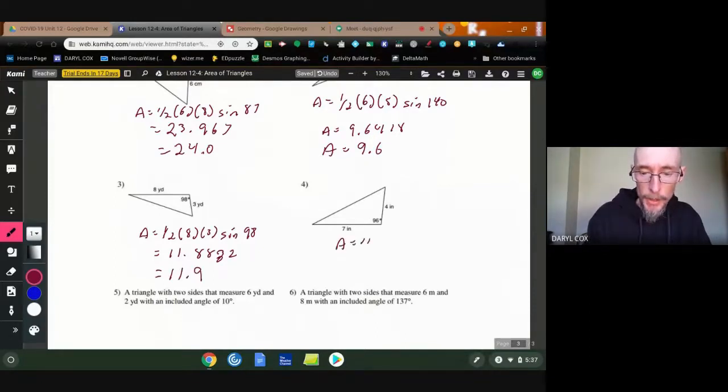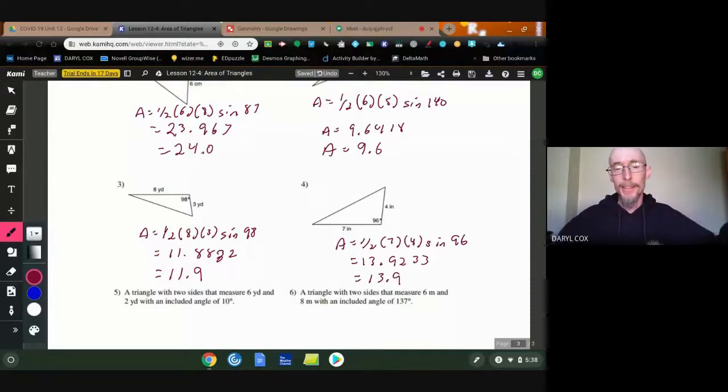Okay, the last one, seven times four, sine of 96. So that's going to be, whoops, that is not what I wanted to write. Let's see, that's going to be 14. Sine of 96 gives me 13.9233, or simply 13.9. Okay? So that's all there is.